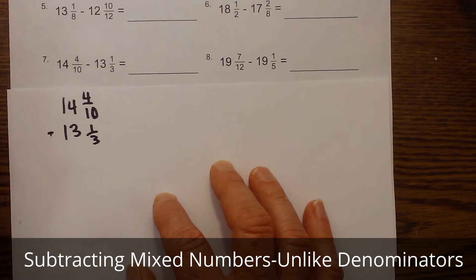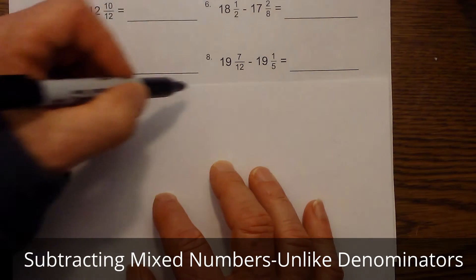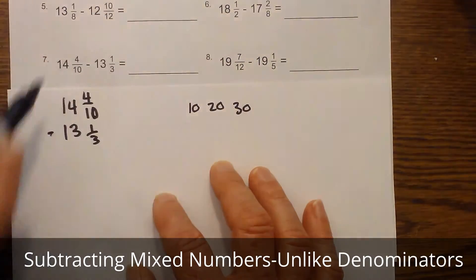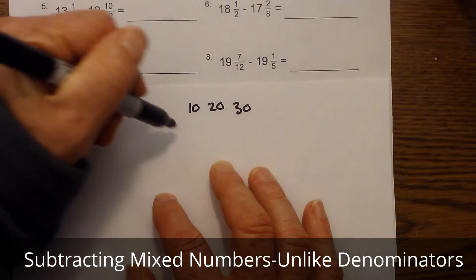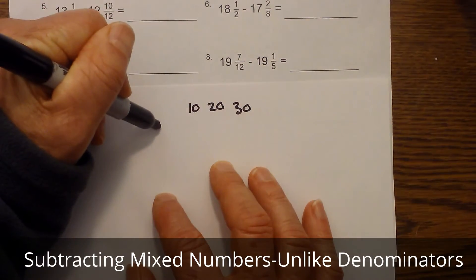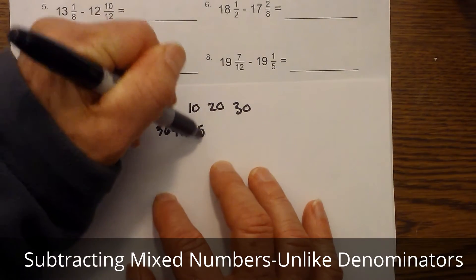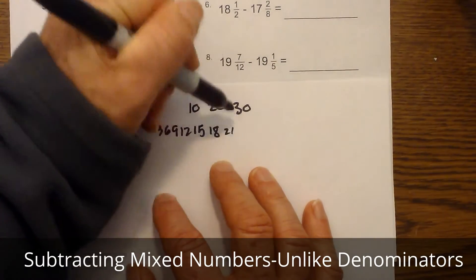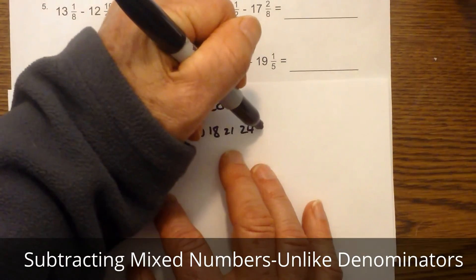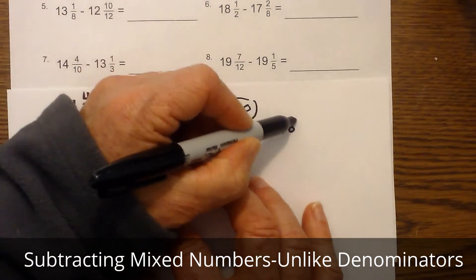Again, I start with my fractions and we do not have a common denominator, so I need to find it. I'm going to go 10, 20, 30, and then I'm going to do the smallest number and see if I can't match one of these: 3, 6, 9, 12, 15, 18, 21, 24, 27, 30. So the common denominator is thirty.